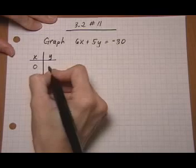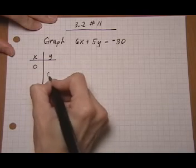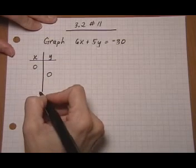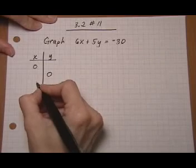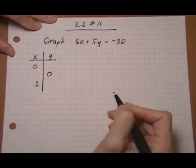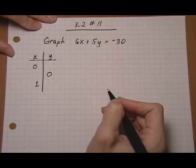So first we'll put x is zero and we'll find y. Then we'll put y is zero and we'll find x. And then we'll just pick some other number for x. And because I see some big numbers happening here, I'm just going to pick a one, and hopefully we won't get anything too large.